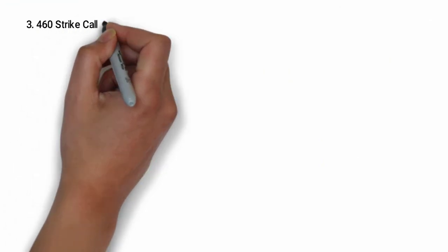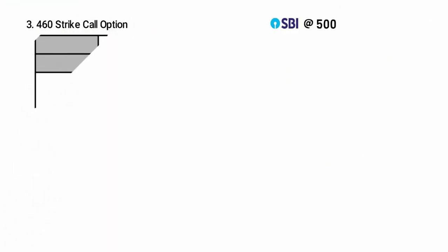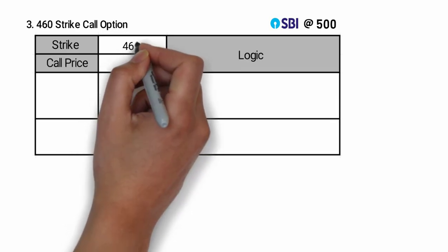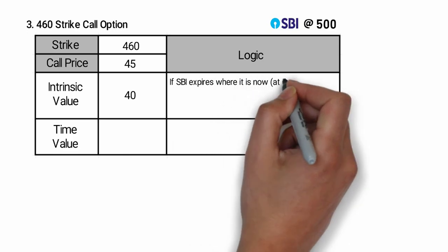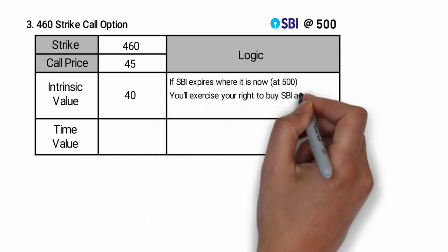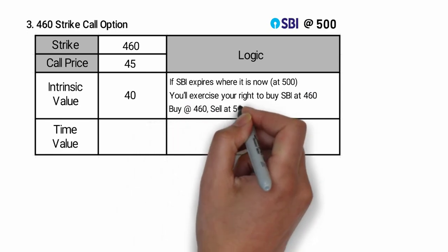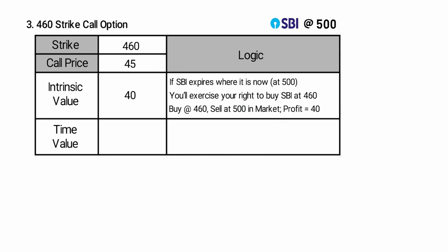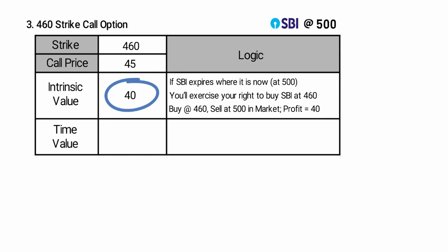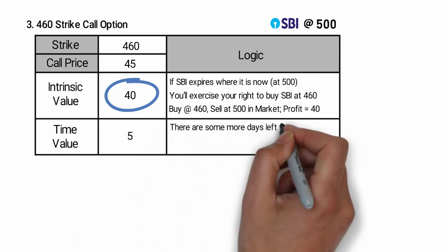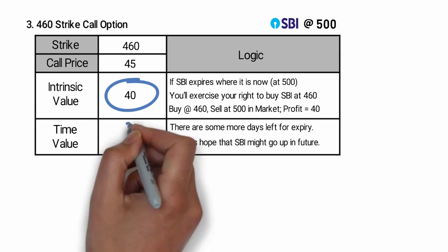Number three: the 460 strike call option. This gives you the right to buy SBI at 460 rupees. The strike is 460 and the call option price is 45 rupees. Can you take a guess what is the intrinsic value here? Exactly — 40 rupees. Because if SBI expires at 500, you will exercise your right to buy SBI at 460 and make 40 rupees straight. This makes the option worth at least 40 rupees. Here the time value is 5 rupees, because there are some days left to expiry and there is a hope that SBI might go up in future.